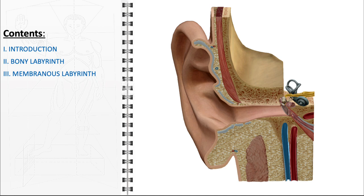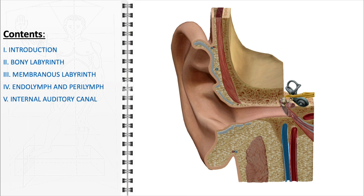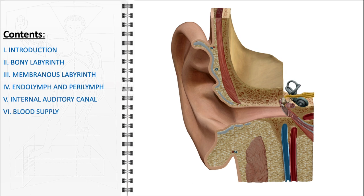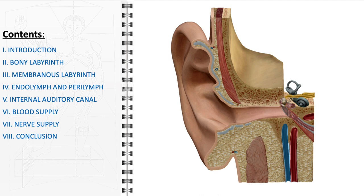We will also focus on the membranous labyrinth, which is encased within the bony labyrinth and contains endolymph, a fluid crucial to the ear's function. The discussion will extend to the fluid systems of the inner ear, specifically the perilymph and endolymph, elucidating their roles in hearing and balance. Further, we'll delve into the intricacies of the internal auditory canal, a key pathway for nerve and blood supply to the inner ear, including an in-depth look at vascularization and innervation. To conclude, we will summarize the key functions and components of the inner ear, emphasizing its importance in our daily lives.